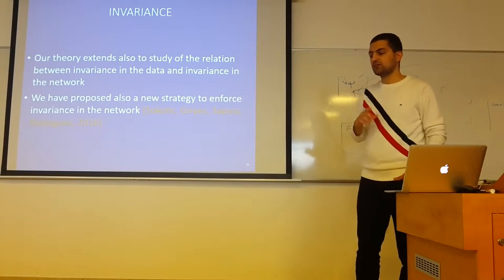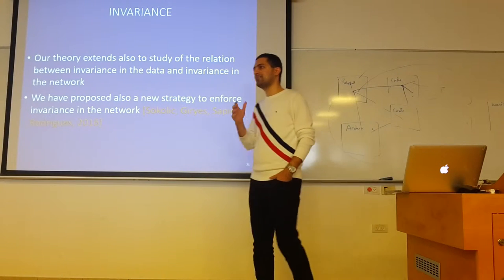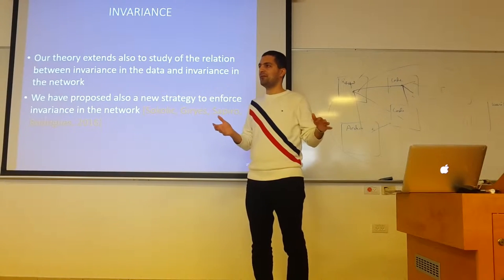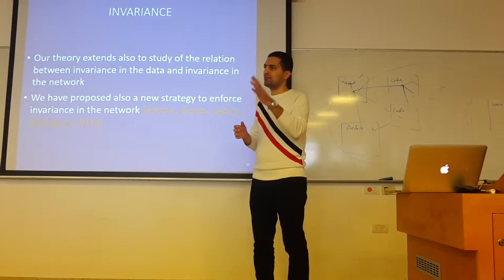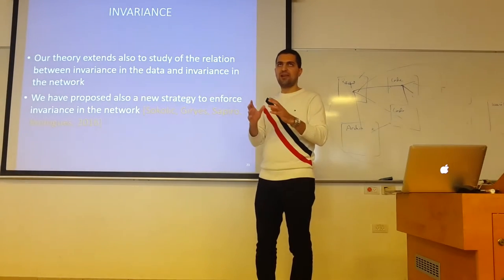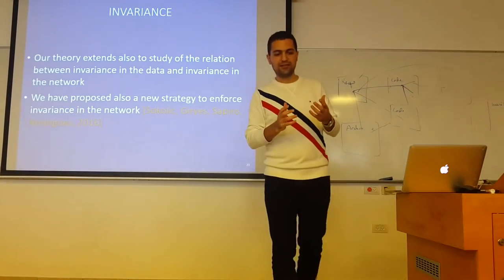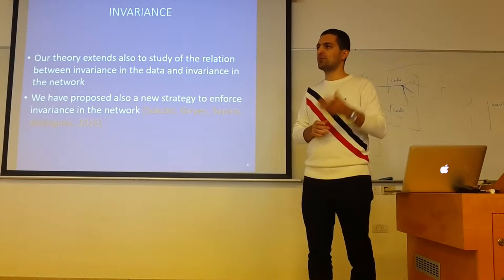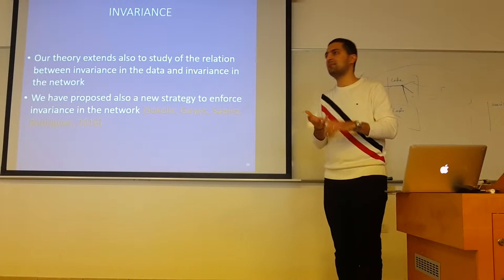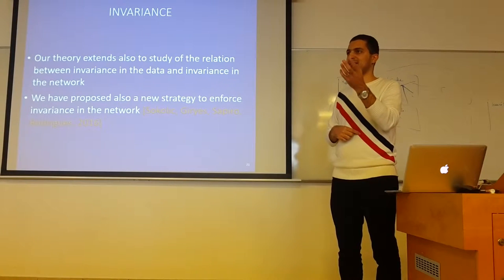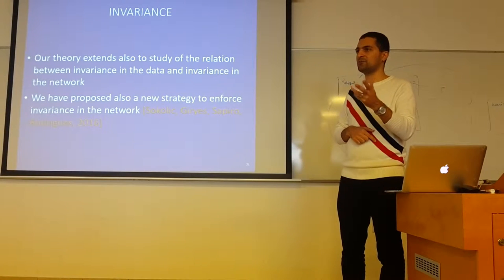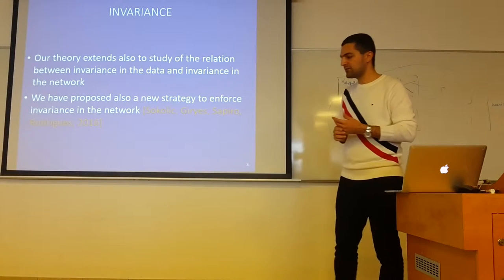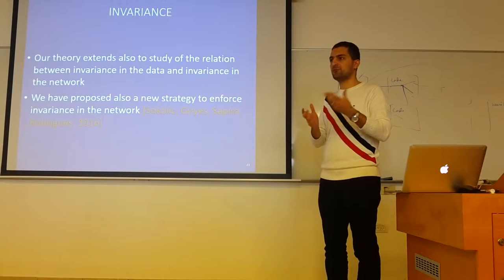This is a good question. When you use these regularization terms, you don't want to harm your convergence. With some regularizations, you have a trade-off between the regularization and the convergence. With others, you get everything. With batch normalization, you get both better regularization and better convergence. With dropout, the convergence is usually two to three times slower, but you get better regularization and the same training error. So when you use this regularization, you should consider also the training error.